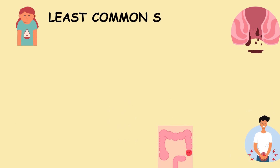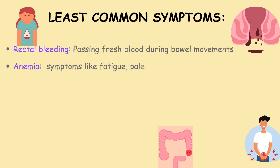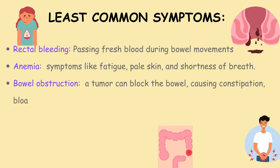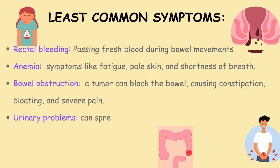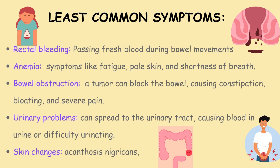Less common symptoms include rectal bleeding with fresh blood during bowel movements, and anaemia symptoms such as fatigue, pale skin, and shortness of breath. Bowel obstruction can occur when a tumour blocks the bowel, causing constipation, bloating, and severe pain. Cancer can also spread to the urinary tract, causing blood in urine or difficulty urinating, and in rare cases skin changes such as acanthosis nigricans.